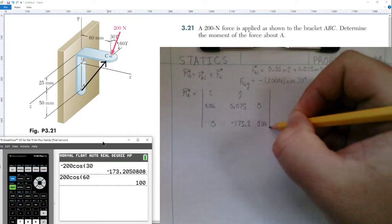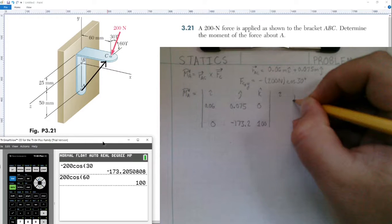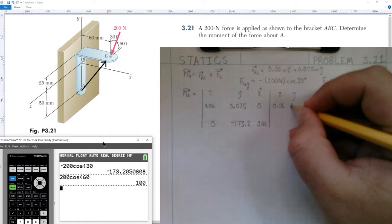Now we're going to simply rewrite the first two columns. We have our k-hat here. We'll rewrite our i-hat and j-hat here. We have 0.06, 0.075. This is a 0, and this is again our negative 173.2.